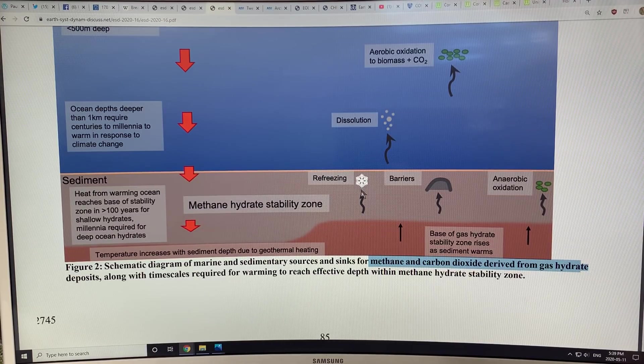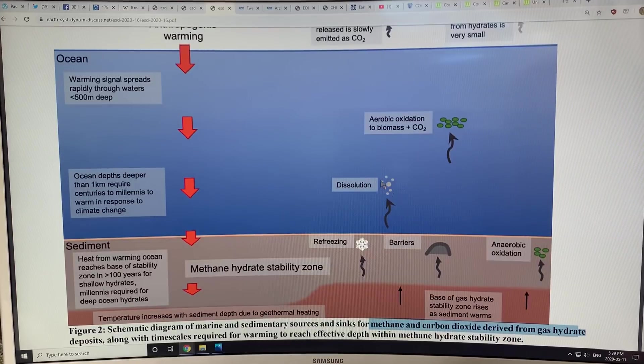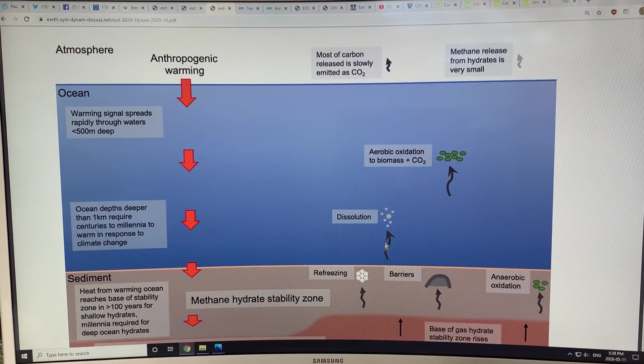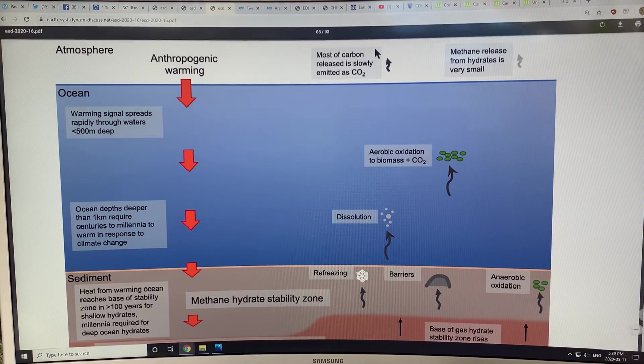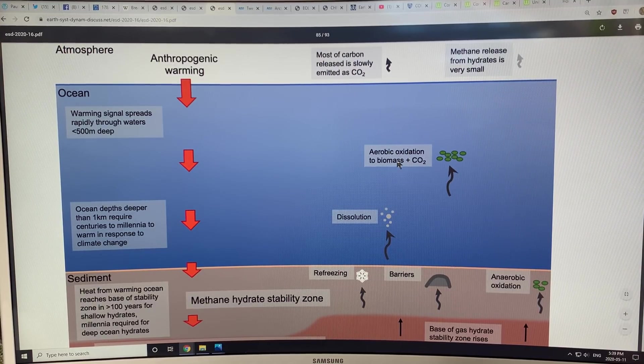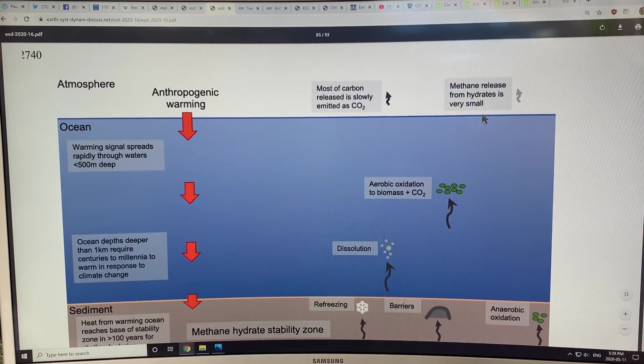If they don't refreeze, if they break through the ocean floor, they can come into the column of water above and dissolve. But if it's coming out in large quantities, it will go right up through the water column and into the atmosphere. If it's decomposed, it can come out as CO2 through aerobic oxidation. It's broken down in the presence of oxygen and can release CO2. But if it's coming out in large quantities, it can go right up into the atmosphere.